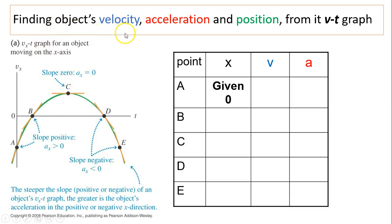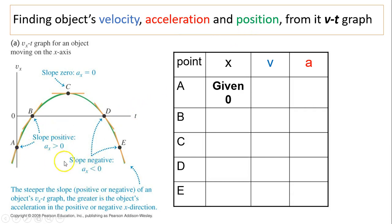From a VT graph, we can find all three things: velocity, acceleration, and position information, if not exact values. So let's take a look at this VT graph. From here we can find information about velocity.